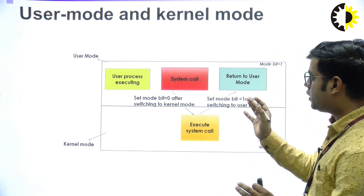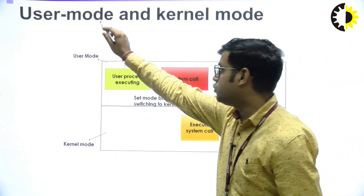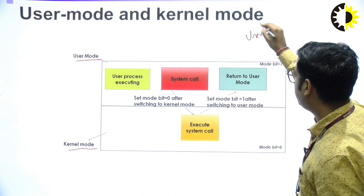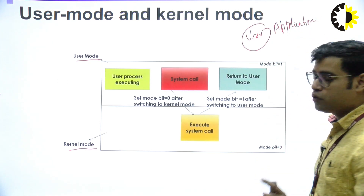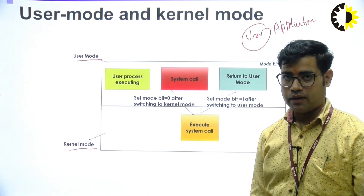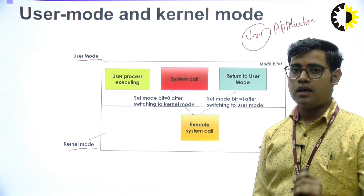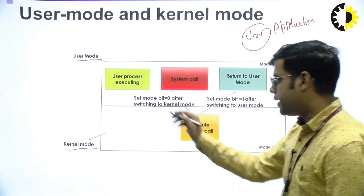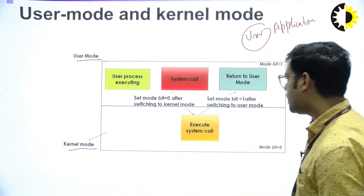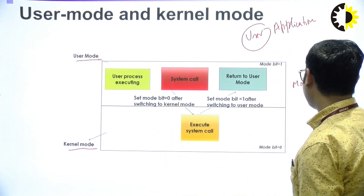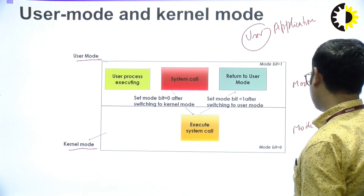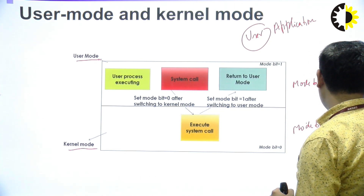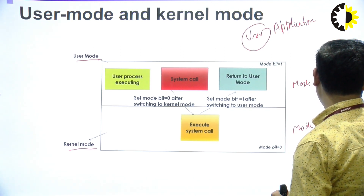Kernel works on different modes. As you can see, we have two modes: user mode and kernel mode. User mode works on the user side, like applications. Users do not directly interact with hardware. Through system calls, we can request a service to the kernel, and the kernel provides different hardware functionality to the user. In user mode, we have a mode bit — mode bit 1 represents the user mode and mode bit 0 represents the kernel mode.